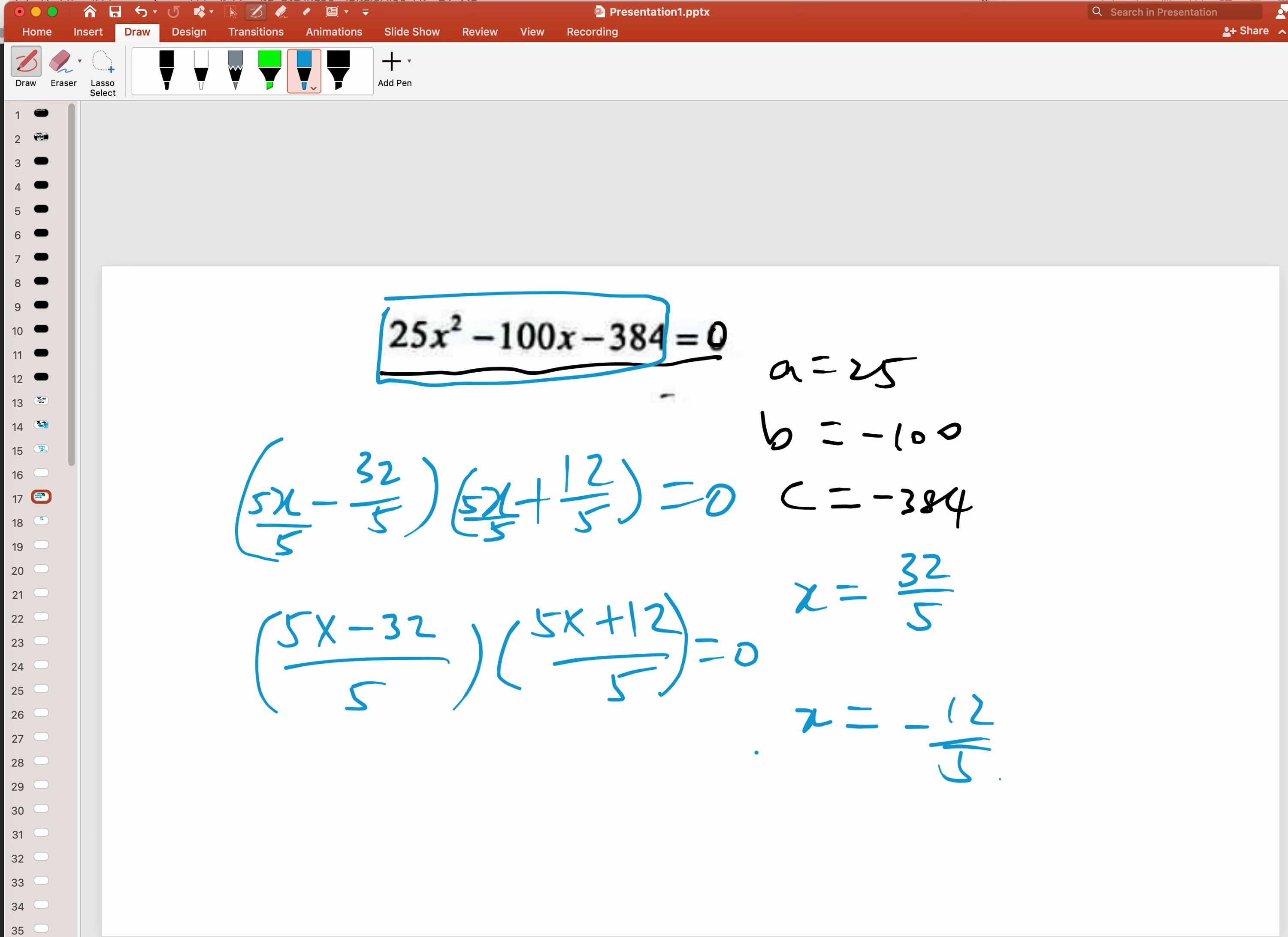It's equal to zero. Then what you do next is this times this - numerator times numerator, denominator times denominator. This is the numerator you end up with, then this is the numerator you end up with.